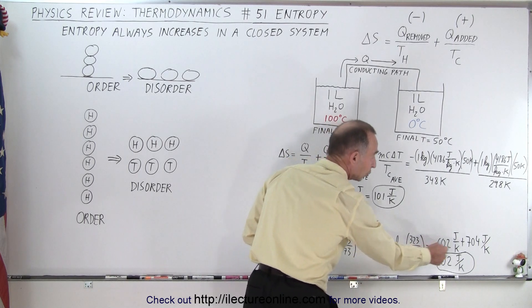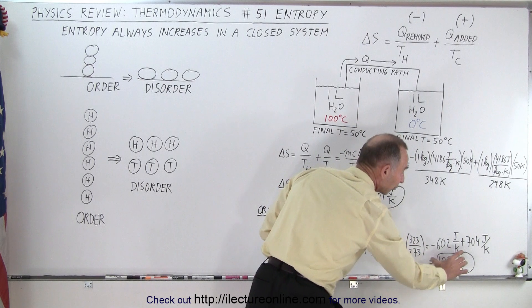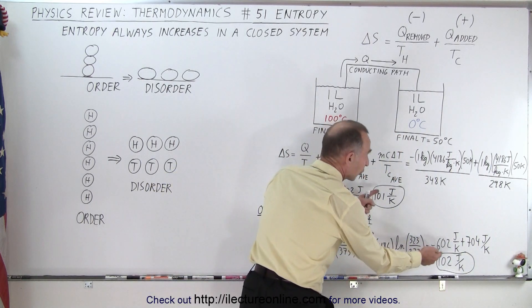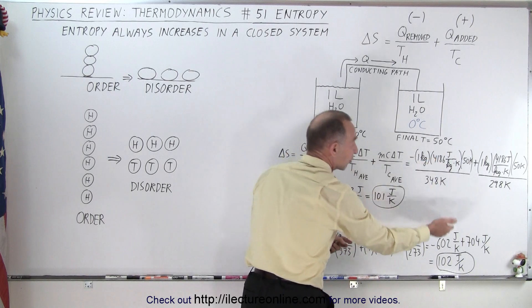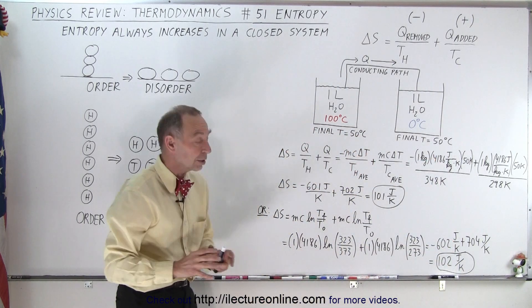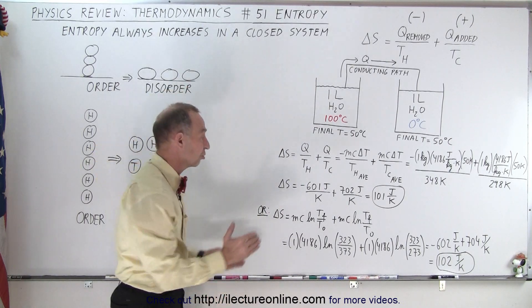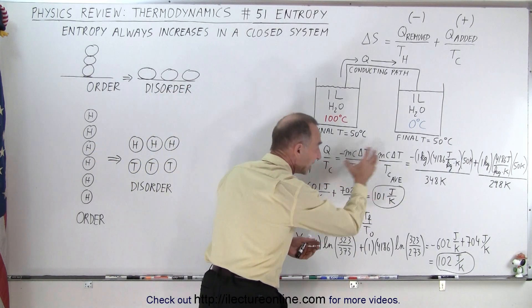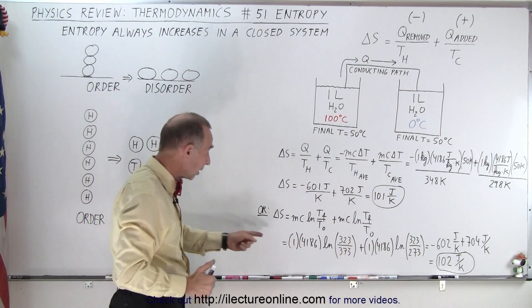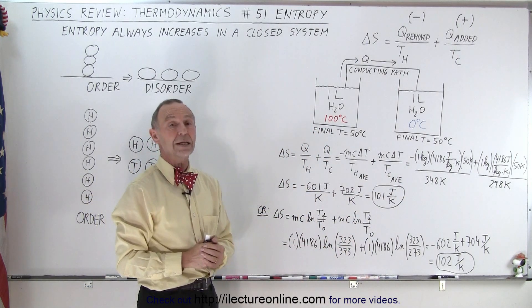So we get minus 602 plus 704, we get a delta of 102 joules per Kelvin. Notice that the value you get is virtually the same using this technique versus that technique. Although this technique will give you a more accurate value, especially when the change in temperature is larger. When the change in temperature is relatively small, the average temperature works quite nicely. When the temperature change is big, you should probably go to this method right here.